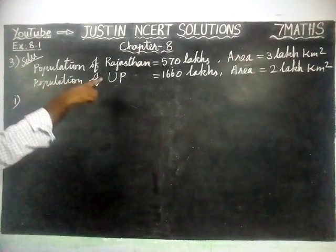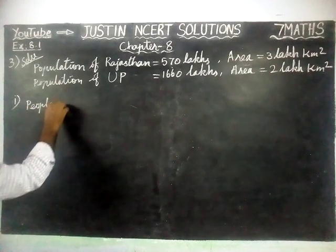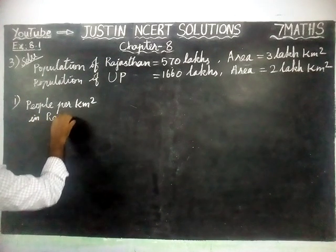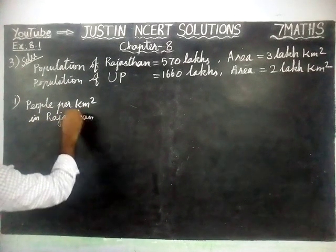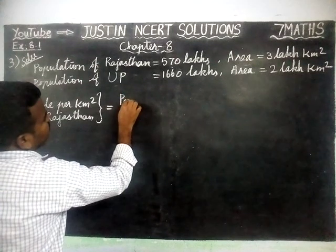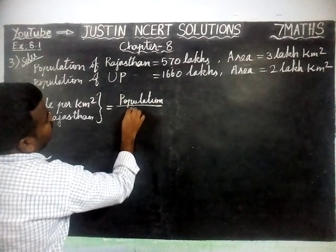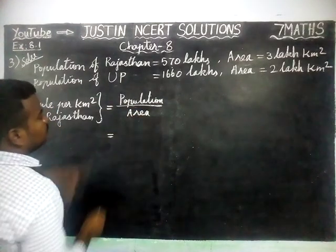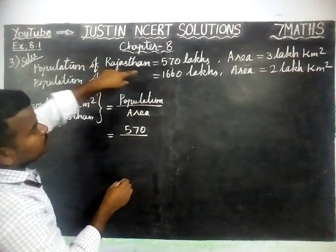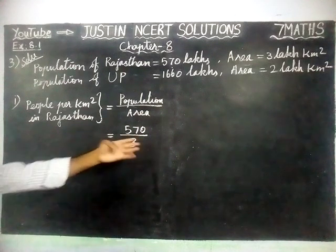I have written the given information. Now we are going to find the answers. People per km² in Rajasthan is equal to — to find people per km² we have to divide population divided by area. Population of Rajasthan is 570 lakhs divided by area 3 lakhs. Both are in the same unit, lakhs and lakhs, so we don't write it.